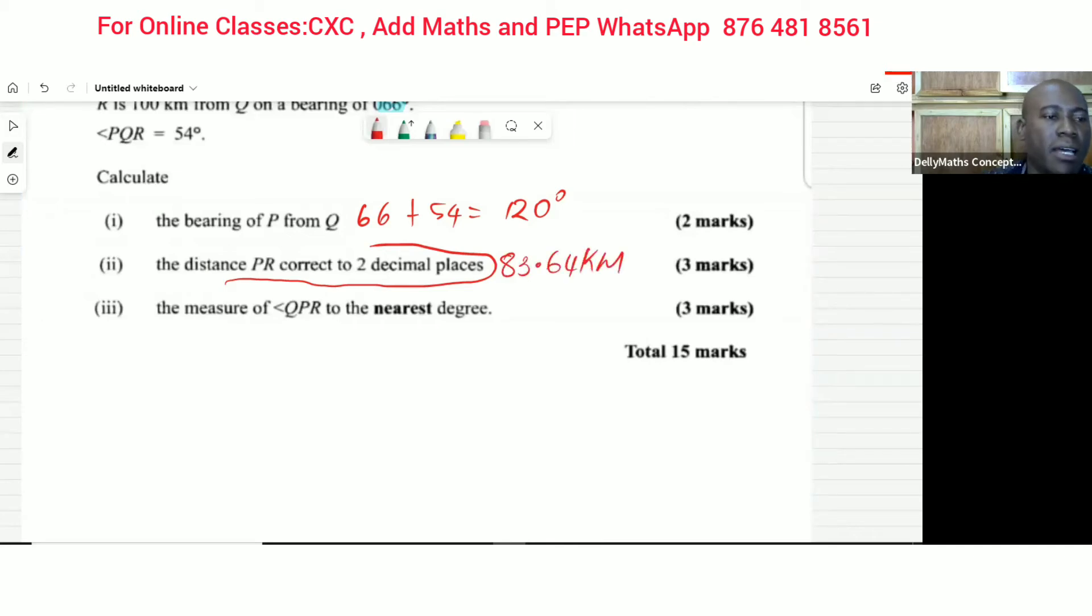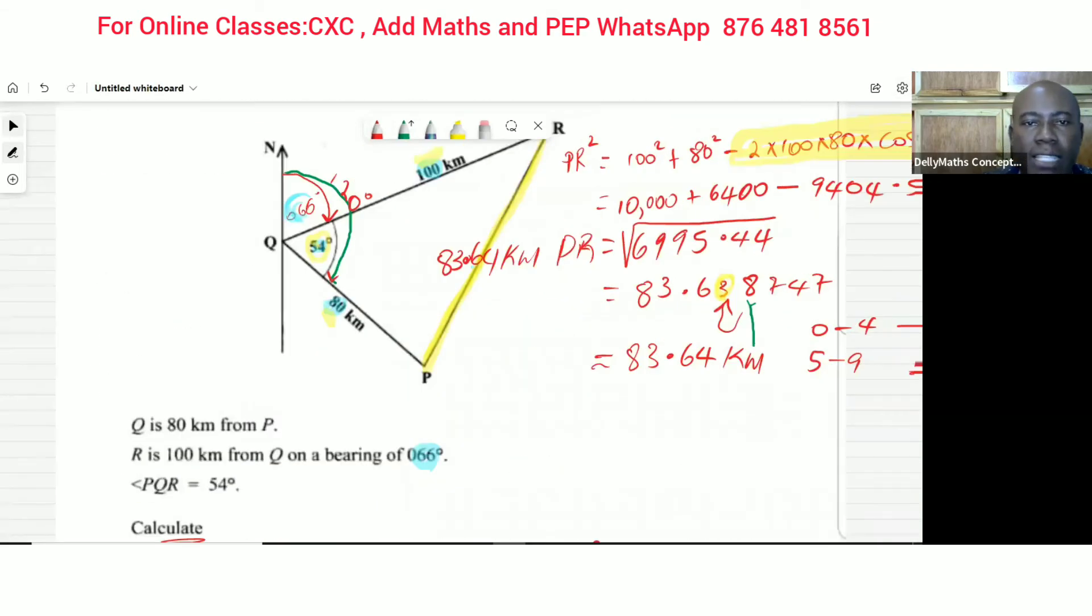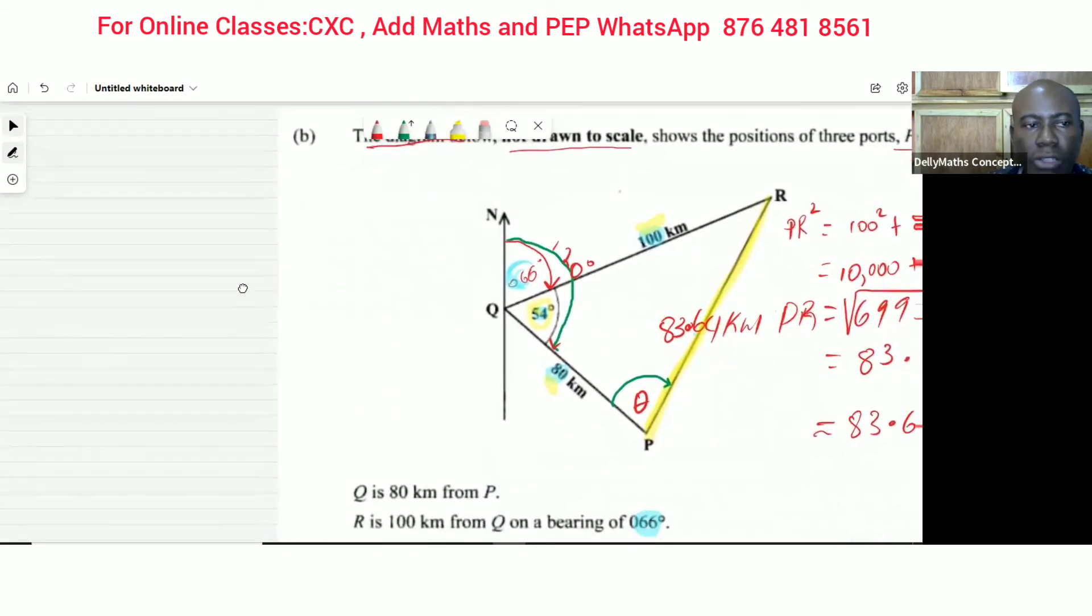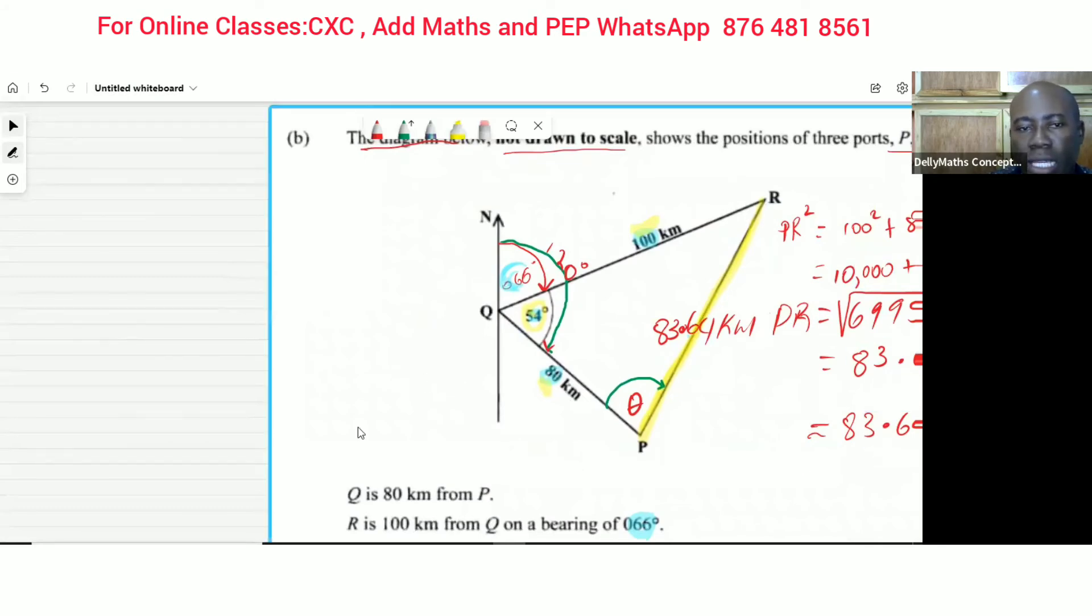Next question says: determine or calculate the measure of angle QPR to the nearest degree. QPR - let's go for that. Let's mark the angle. QPR is right here. They want us to find that. So in doing QPR, what we want to do is to focus on the things that are necessary. Let me take off some things to clear off the diagram so that we could look at it.